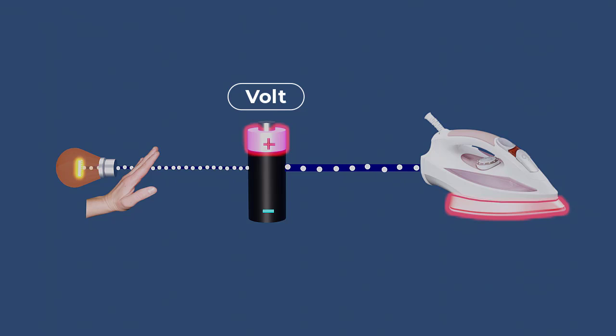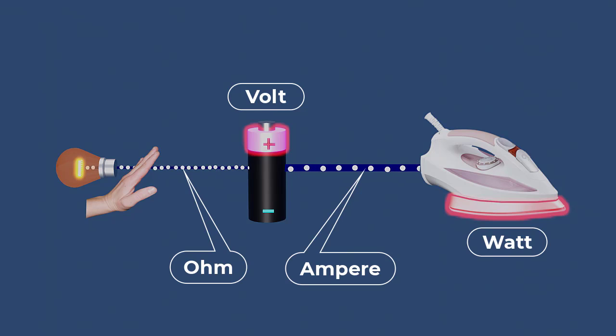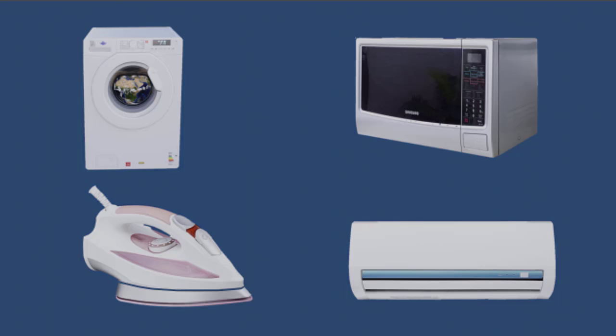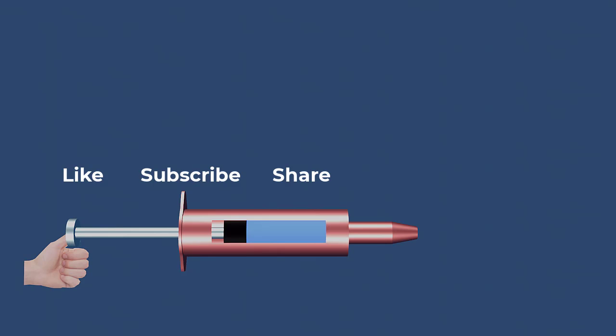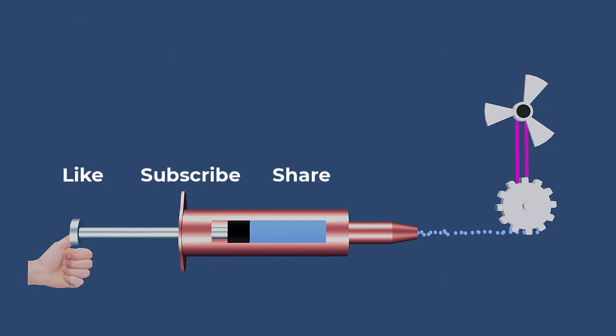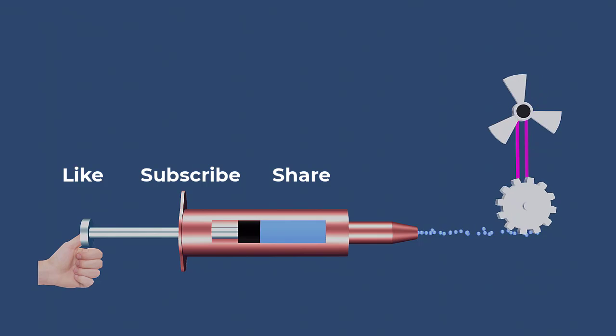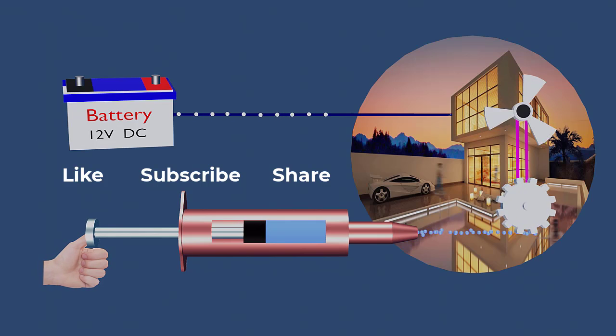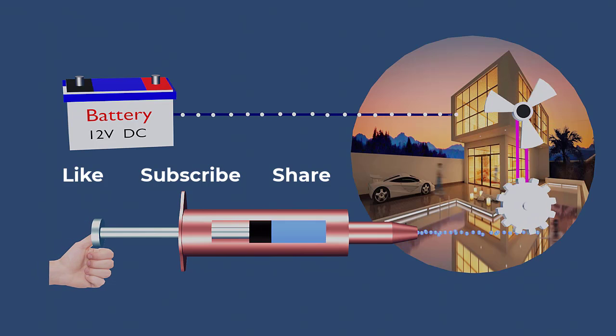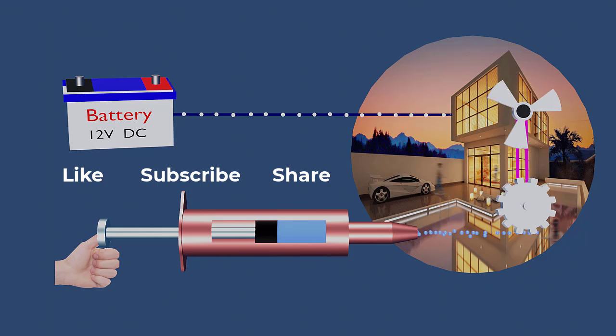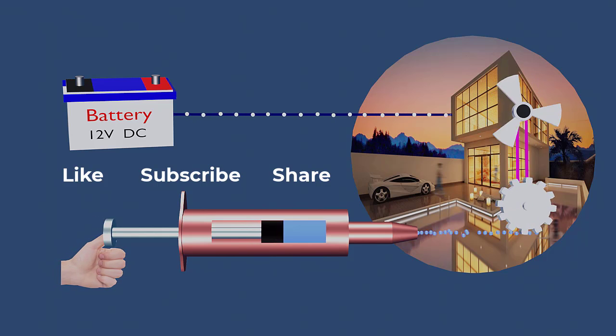Understanding volt, watt, ohm, and ampere is key to making informed decisions when selecting appliances for your home. By remembering the syringe analogy, you can easily grasp how these concepts interact and influence energy consumption in your home. I hope this explanation helps you understand more about electric current, resistance, voltage, and wattage.